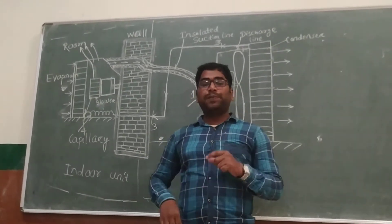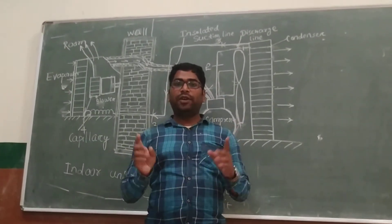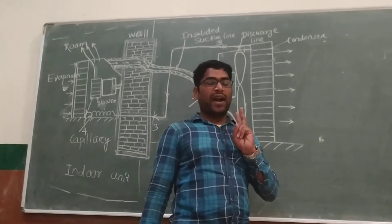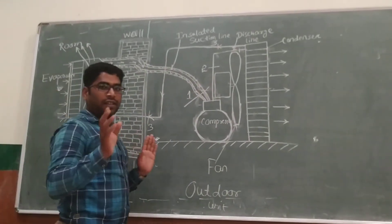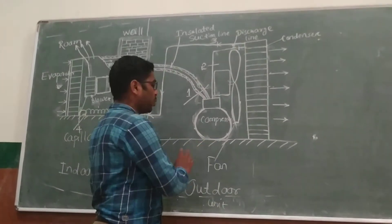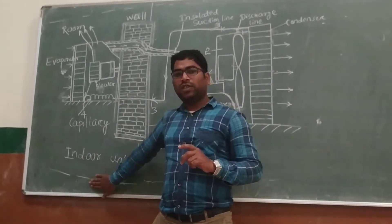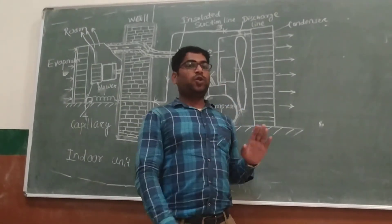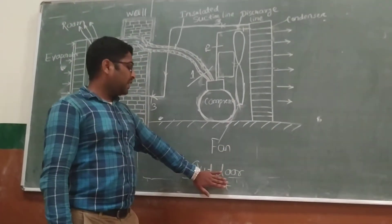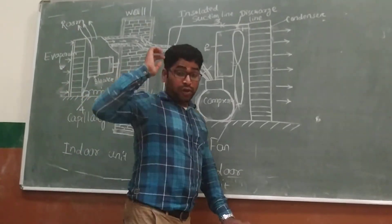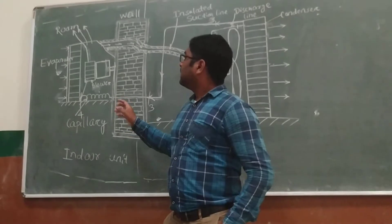In a split AC, the whole unit is divided into two parts. One part is kept inside the room and another part is kept outside the room. The unit set up inside the room is called the indoor unit, and the unit set up outside is the outdoor unit. The indoor unit is built as a cabinet.